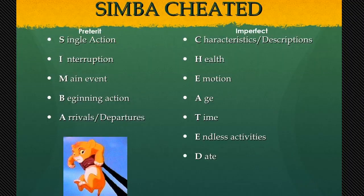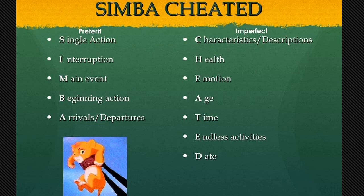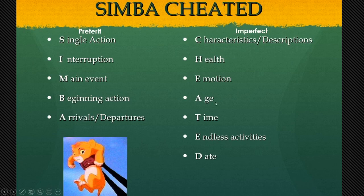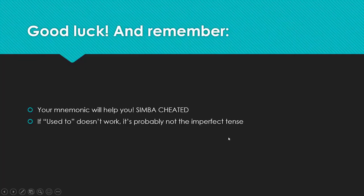If you need mnemonic devices, here's one: 'SIMBA CHEATED.' For the preterite, SIMBA stands for: Single actions, Interruptions, Main event/beginning action, Beginnings, Arrivals and departures — like 'yo fui a las once' (I left at 11 o'clock). For the imperfect, CHEATED stands for: Characteristics, Health, Emotions, Age — like 'yo tenía 14 años' — Time, Endless activities, and Dates. Good luck, and remember: if 'used to' doesn't work, it's probably not the imperfect tense.